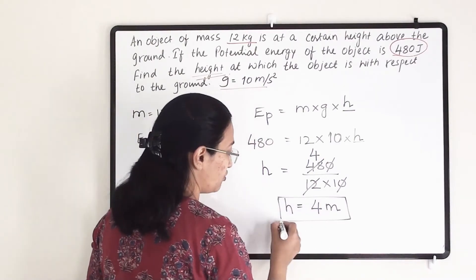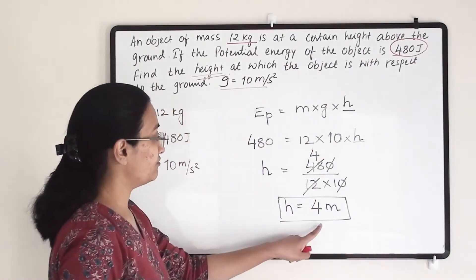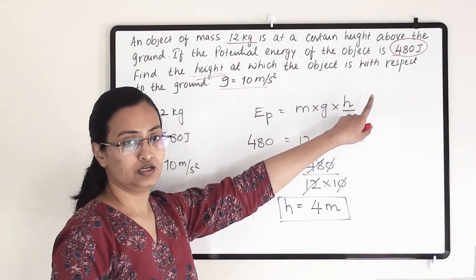So when we are raising the object to 4 meter of height, it will gain energy 480 joule.